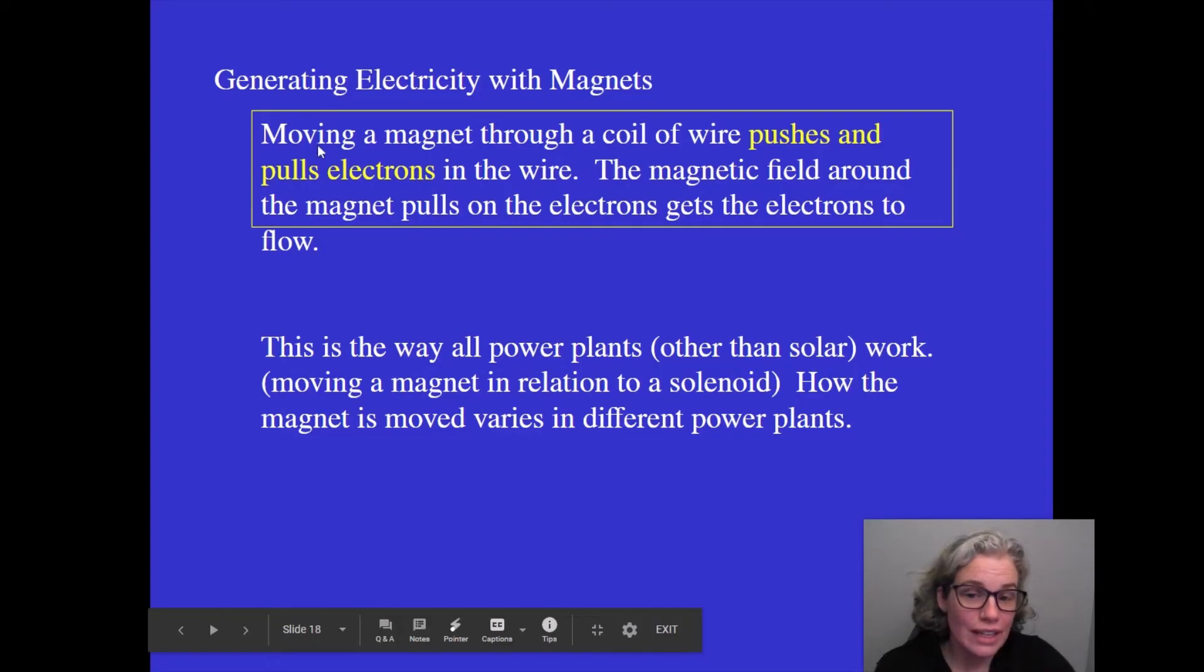The key to generating electricity with a magnet is that that coil is going to push and pull on the electrons that were already in the wire. And it's going to allow those electrons to get into motion, which is the basis of electricity. This is the basic idea behind every power plant other than solar. You have to somehow move a magnet in relationship to a coil of wire.